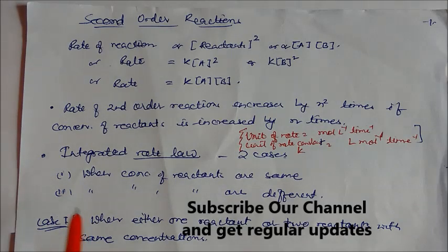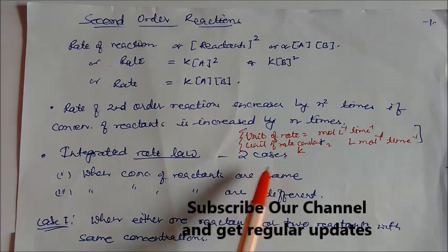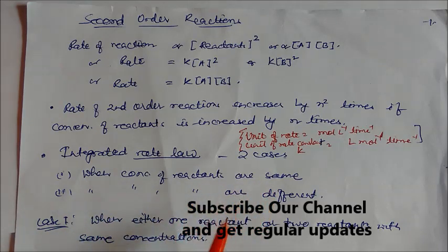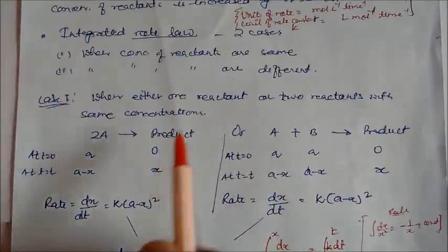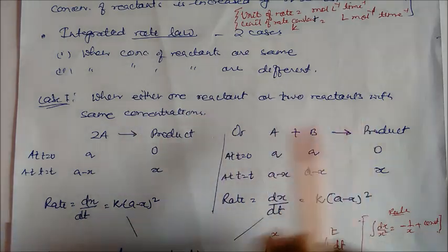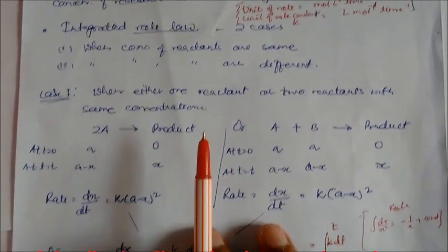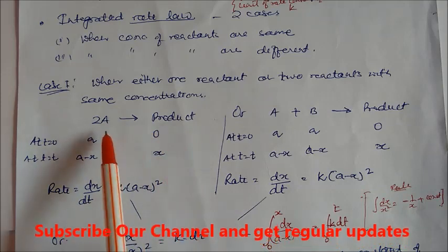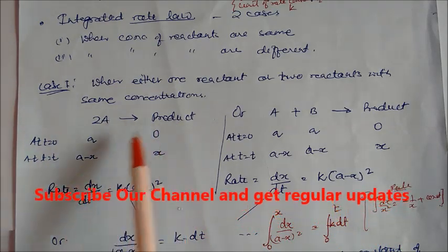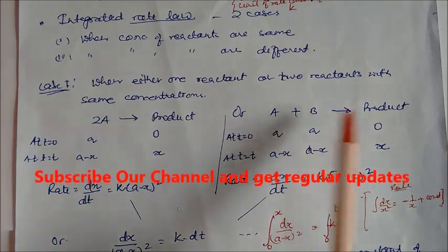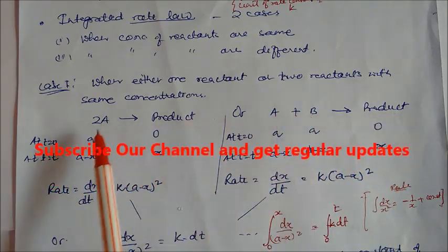Now let us see this second order reaction through the integrated rate law. We have two cases: case number one is when the concentration of reactants are the same, and case number two is when the concentration of reactants are different. For case one, either one reactant or two reactants with same concentration — this means 2A gives product, or A plus B gives product where both have equal initial concentration.